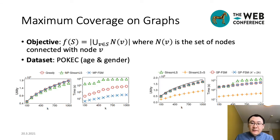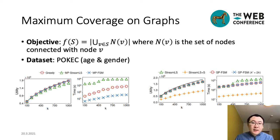The first application for evaluation is maximum coverage on graphs, which aims to select a small set of nodes such that the union of their neighborhoods has the largest size. The experiments are performed on a publicly available dataset, POKEC, which can be downloaded from the SNAP dataset. We use age or gender as the sensitive attribute for graph partition. From the figures, we can see our algorithms outperform the state-of-the-art algorithms in both multi-path streaming and single-path streaming settings.